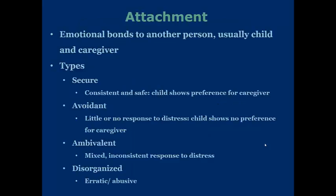Because of these interpersonal attractions, people will develop attachments, or emotional bonds to another person — usually a child and a caregiver, but this can be different and varied. There are four types. One is a secure attachment, which is consistent and safe. Children in this situation will generally show preference for their caregiver.